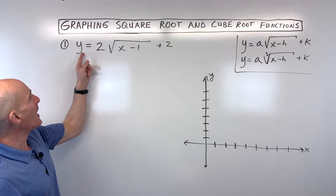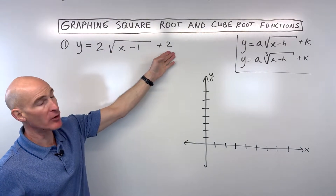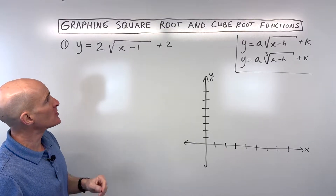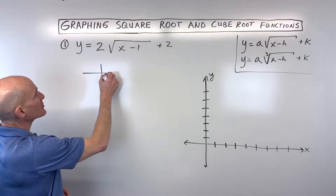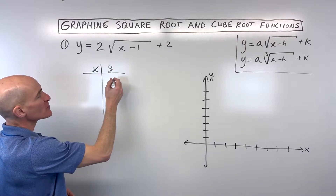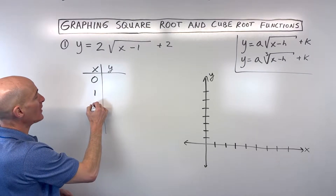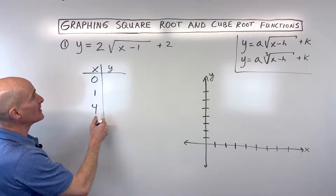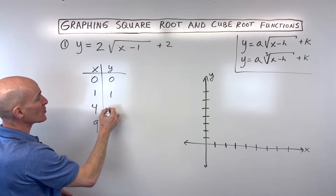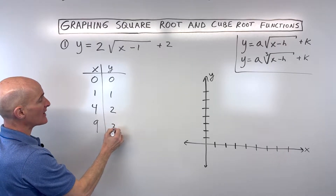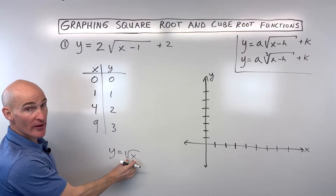The first example, we've got y equals 2 times the square root of x minus 1 plus 2. What I like to do with these radical equations when I'm graphing them is make a table. With the square root function, numbers that are easy to take the square root of would be 0, 1, 4, and 9. The square root of 0 is 0, square root of 1 is 1, square root of 4 is 2, square root of 9 is 3 — working with the parent function y equals square root of x.